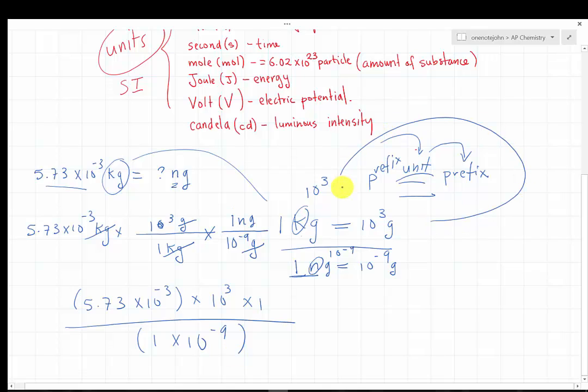But understand that you can interpret the prefix as a conversion factor. Just like kilogram is interpreted as one kilogram equal to 10 to the third gram, or nanogram is interpreted as one nanogram equal to 10 to the negative 9 gram.